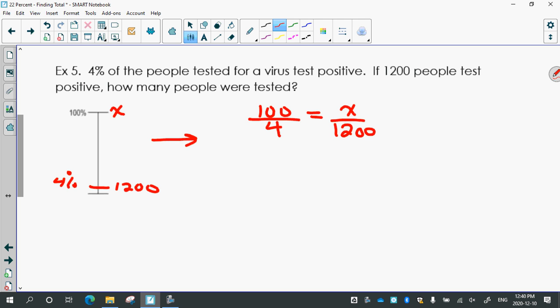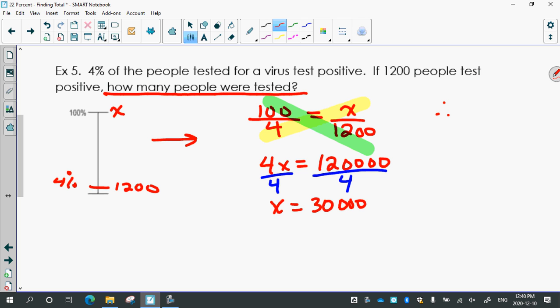Remember, 100 represents the total, the top always represents the total. So we got 4x equals 120,000 divided by 4. So how many people were tested? Therefore, 30,000 people were tested. So we've done a ton of work with percent today. We've asked the questions every which way.